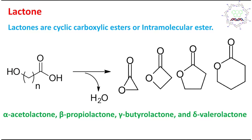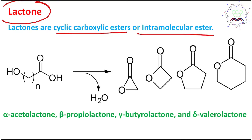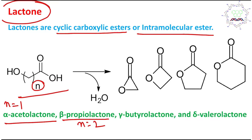Before going into details, I want to explain some key terms. Today's discussion is iodolactonization, so the question is: what is a lactone? A lactone is a cyclic carboxylic acid ester, or you can say an intramolecular ester. Looking at hydroxycarboxylic acid, depending on the number n: if n=1, it is alpha-acetolactone; if n=2, it is beta-propiolactone; if n=3, it is gamma-butyrolactone. This gives 3-, 4-, and 5-membered lactones.